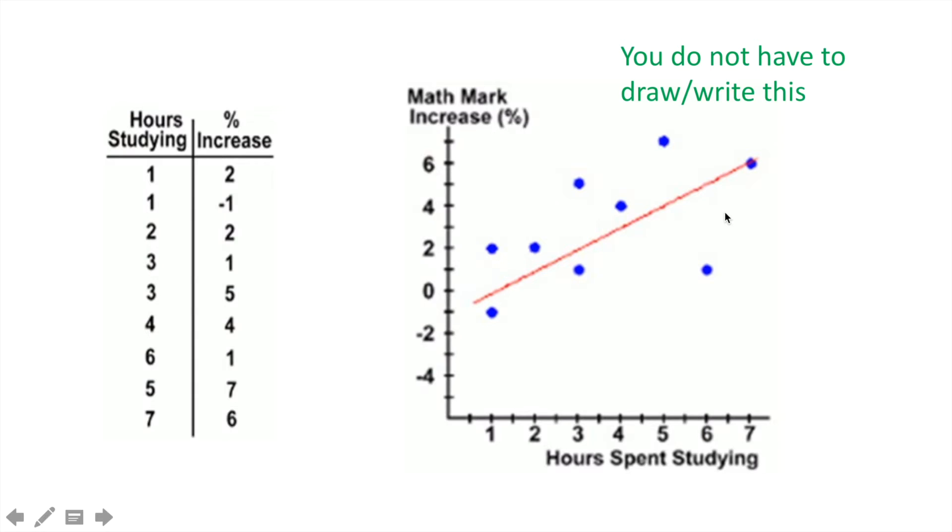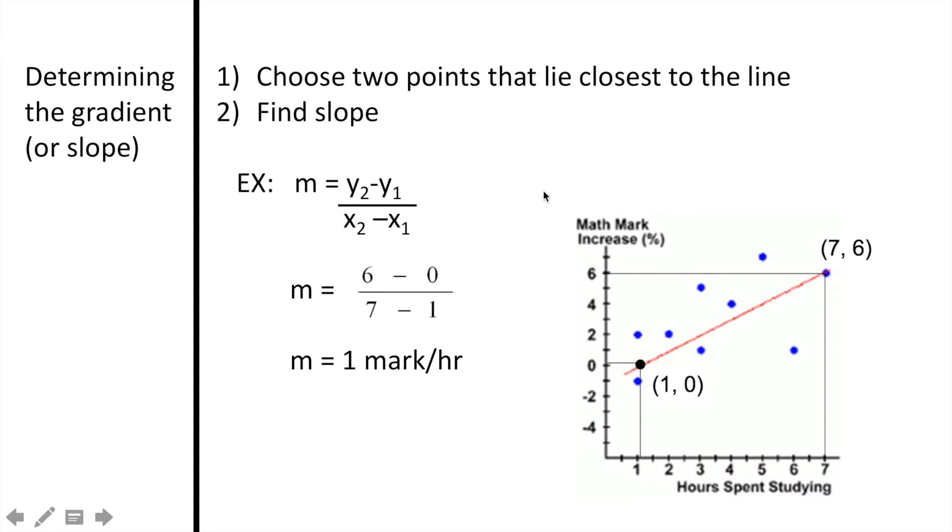Using this graph, we can actually calculate the slope as well as the equation for this trend. To determine the gradient or slope, you want to choose two points that lie close to the line. Using these two coordinates, you then find the slope. Using the graph from the previous slide, it shows a coordinate of (1, 0) and (7, 6) as the two coordinates that are chosen. To find the slope, we just take the difference of the y-coordinates divided by the difference of the x-coordinates. Be careful to subtract the second y-value from the first y-value and not the other way around. When you plug in your values correctly, you will have the slope equaling 6 minus 0 divided by 7 minus 1, which will equal one mark per hour. This means that you can improve by one mark for each extra hour that you study.